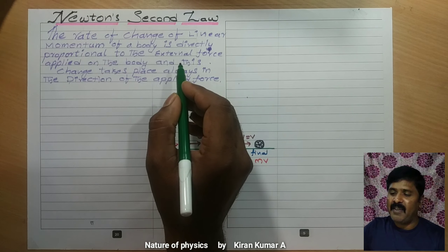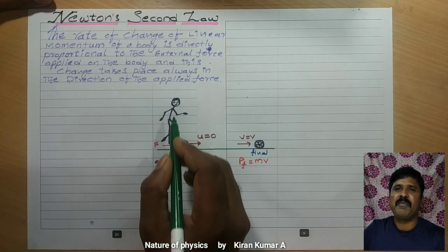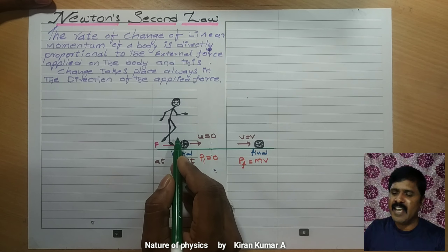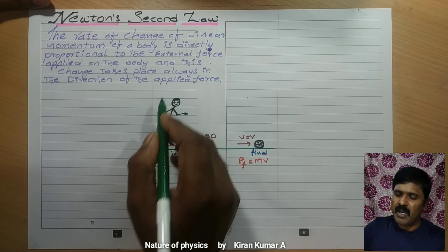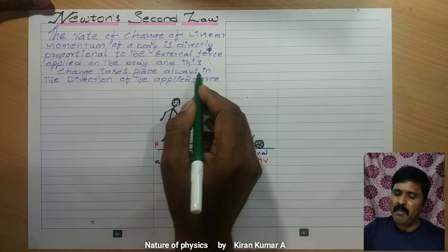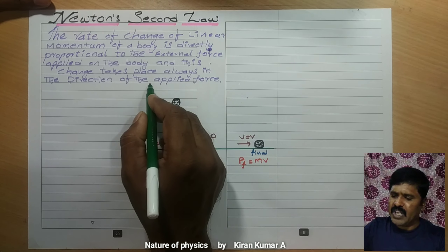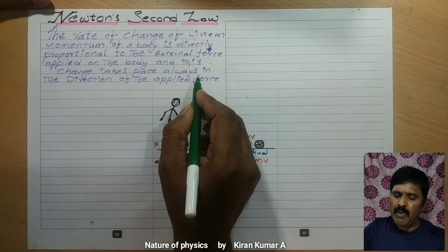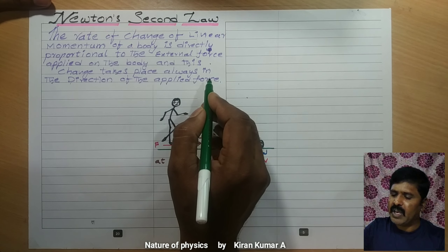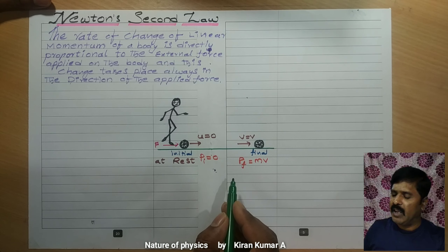The rate of change of linear momentum of a body is directly proportional to the net external force applied on the body. And this change takes place always in the direction of the applied force.